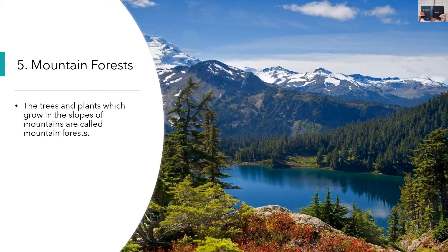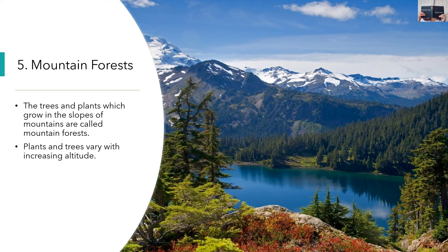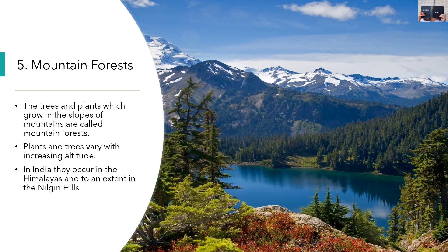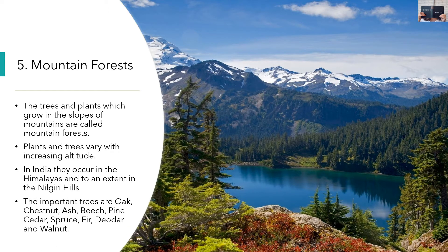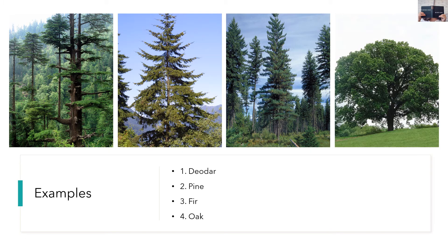Mountain Forest: The trees and plants which grow on the slopes of mountains are called mountain forest. Plants and trees vary with increasing altitude — from broad-leaved evergreen trees to coniferous trees. In India they occur in the Himalayas and to an extent in the Nilgiri Hills. Some important trees are oak, chestnut, ash, beech, pine, cedar, spruce, fir, deodar, and walnut.